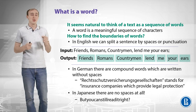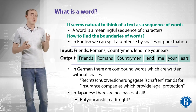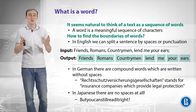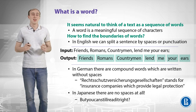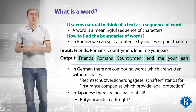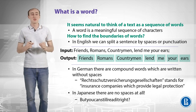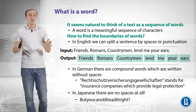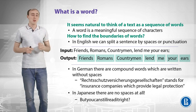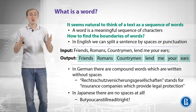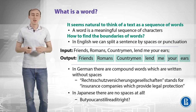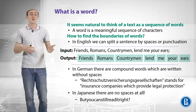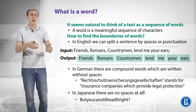Let's start with words and define what a word is. It seems natural to think of text as a sequence of words, where a word is a meaningful sequence of characters. In English, it is usually easy to find word boundaries because we can split sentences by spaces or punctuation and what is left are words. For example, 'Friends, Romans, countrymen, lend me your ears' — splitting on commas, semicolons, and spaces gives us the words: friends, Romans, countrymen, and so forth.